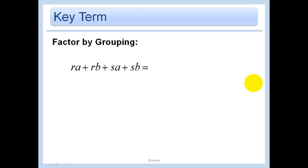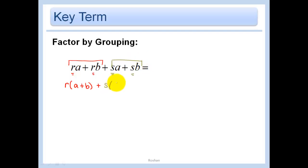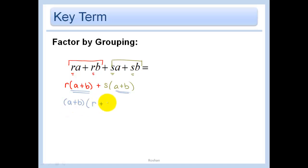Now I want to factor by grouping. I look for something in common. In the first two terms I have an r, and in the second two terms I have an s. I factor r out of the first two terms, leaving (a + b), then factor s out of the last two terms, also leaving (a + b). Now (a + b) is in common, so I factor it out, leaving r and s — giving (a + b)(r + s).